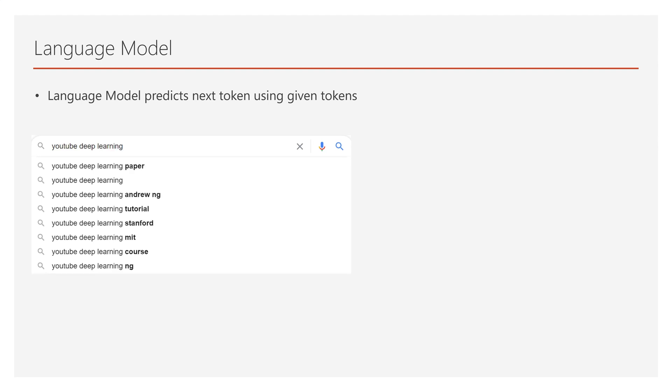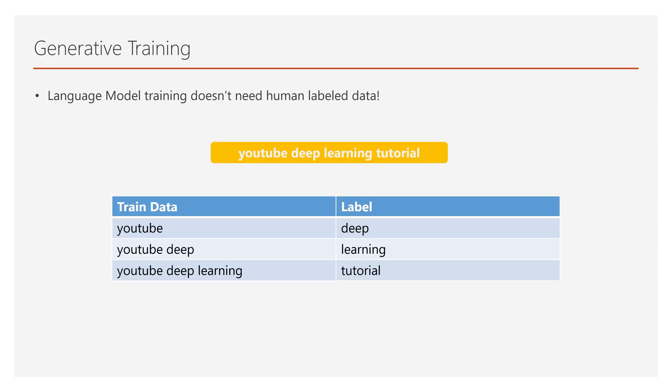More inputs lead to better predictions. GPT is basically a language model. Then why is it called a Generative Pre-Trained Language Model? A language model can be trained without human label data, since you can programmatically generate labels from raw text. So GPT is a Generative Language Model.